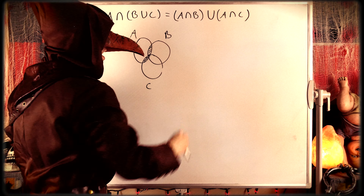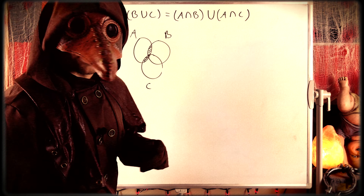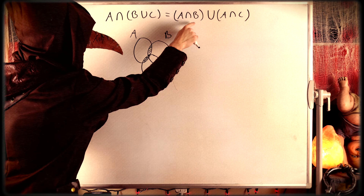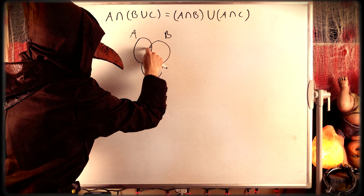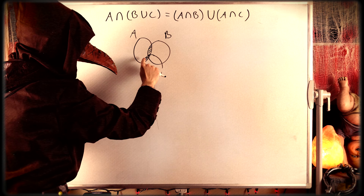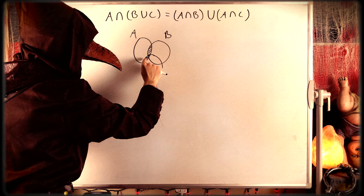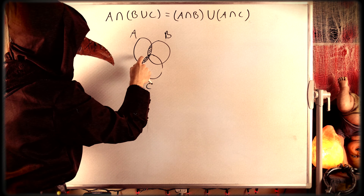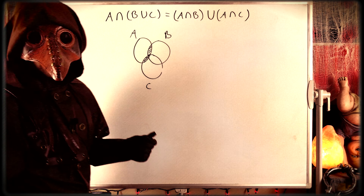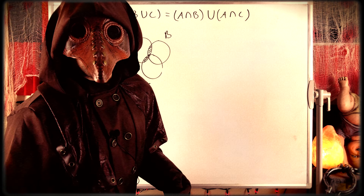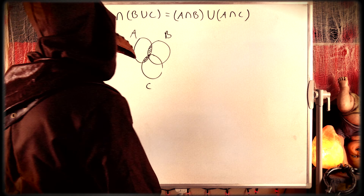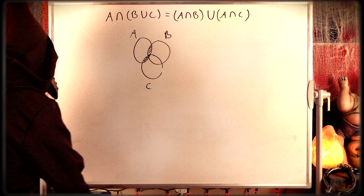What about A intersect B union A intersect C? Well, A intersect B is right there, A intersect C is right there, and if we union them we get A intersect B union C, which we already shaded. So we can quickly convince ourselves that yes, this result is true.